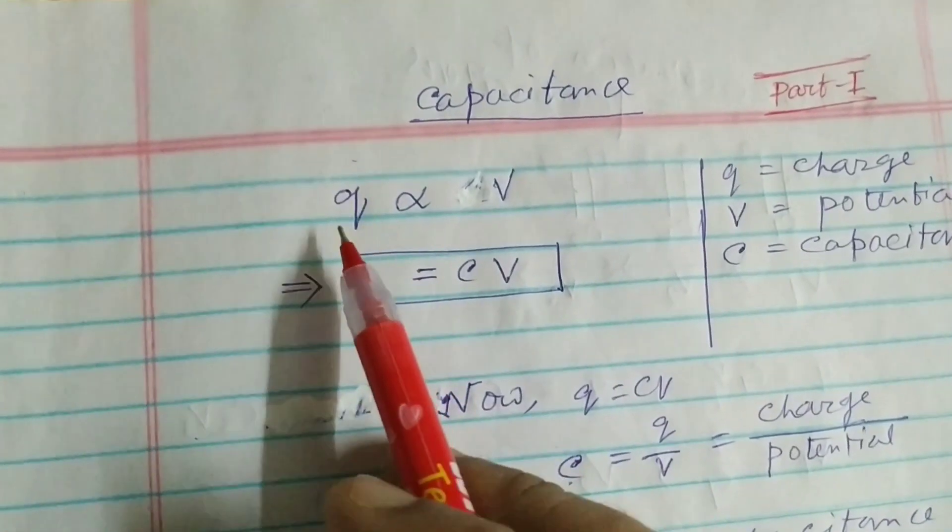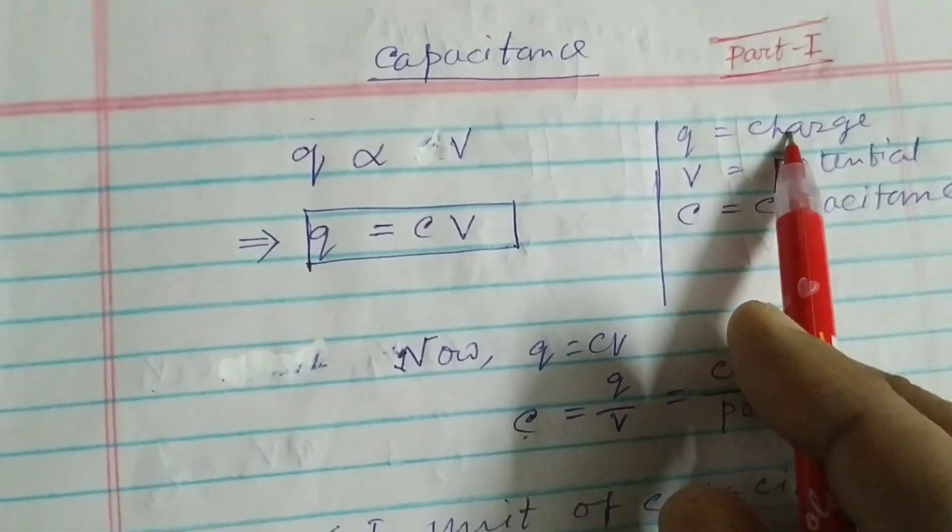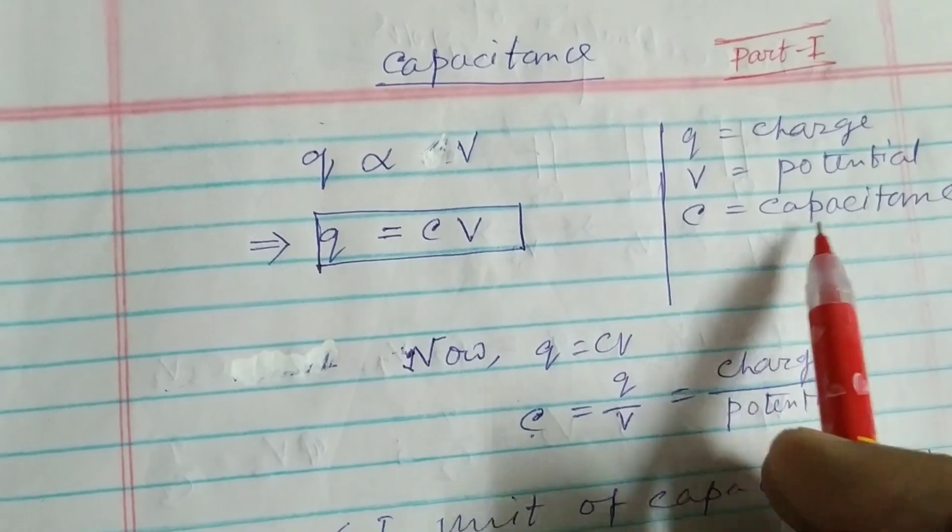Here you can see that Q is the charge, V is the potential, and C is the capacitance.